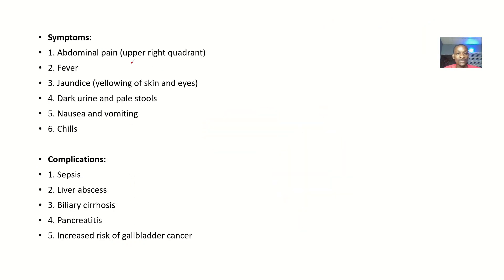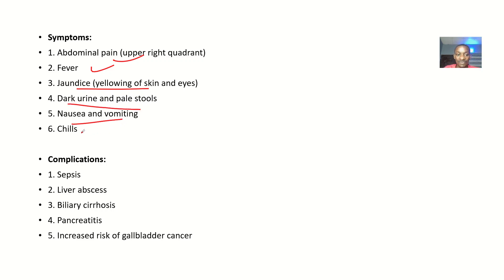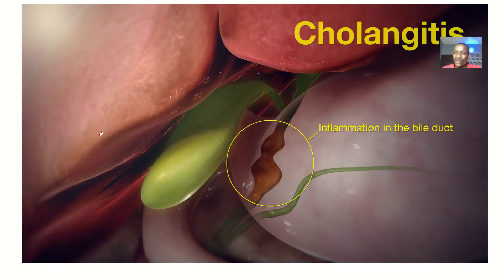Talking about the symptoms: there will be abdominal pain, there will be fever and jaundice — jaundice is the yellow coloration of the skin and eyes. There will be dark urine and pale stools. There could be nausea and vomiting, and there could be chills.